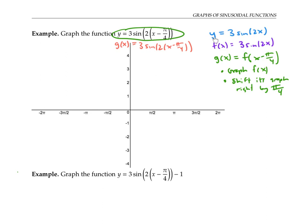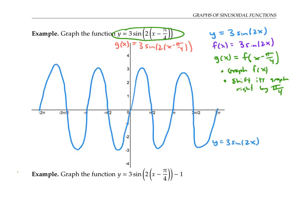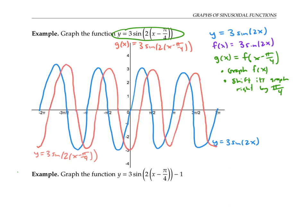Here's the graph of y equals three sine of two x — it's just the graph of sine stretched vertically by a factor of three and shrunk horizontally by a factor of one half. Now to graph the function I want, I shift this graph to the right by pi over four. Notice that since I had the function written in factored form, I could just read off the horizontal shift. If instead I wrote it as y equals three sine of two x minus pi over two — which is algebraically equivalent — it would be easy to get confused and think I needed to shift by pi over two. So it's best to factor out the coefficient of x first before figuring out what the shift is.